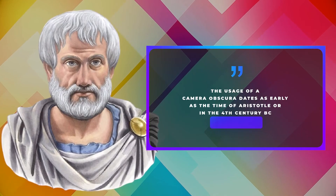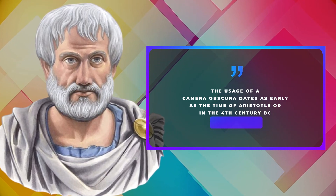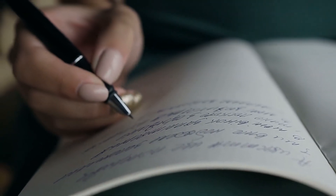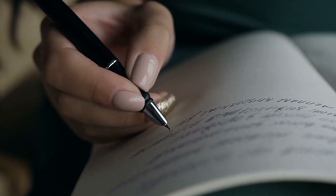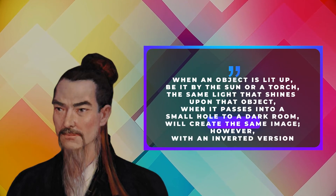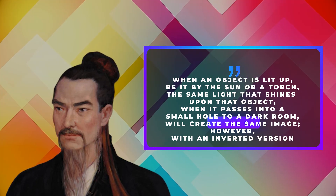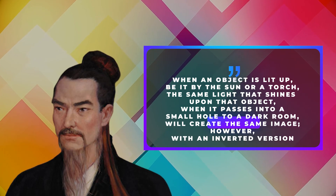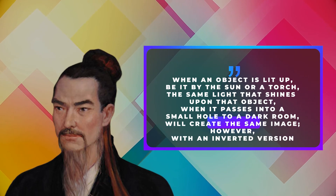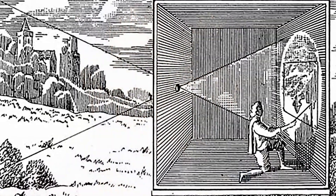The usage of a Camera Obscura dates as early as the time of Aristotle, or in the 4th century BC. On a documented and written record, it was believed that a theorist in China named Motsu observed that when an object is lit up — be it by the sun or a torch — the same light that shines upon that object, when it passes into a small hole to a dark room, will create the same image, however with an inverted version.